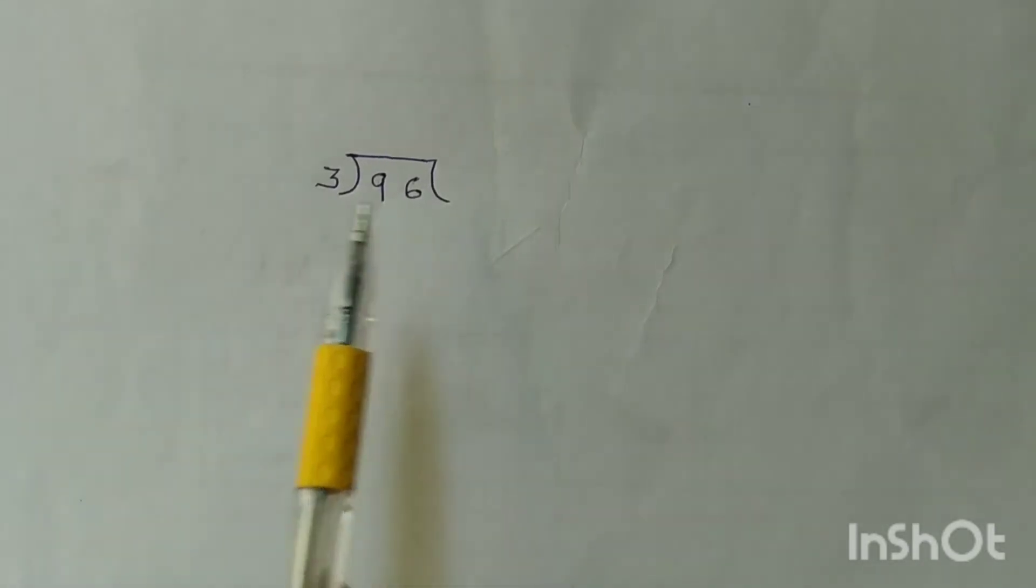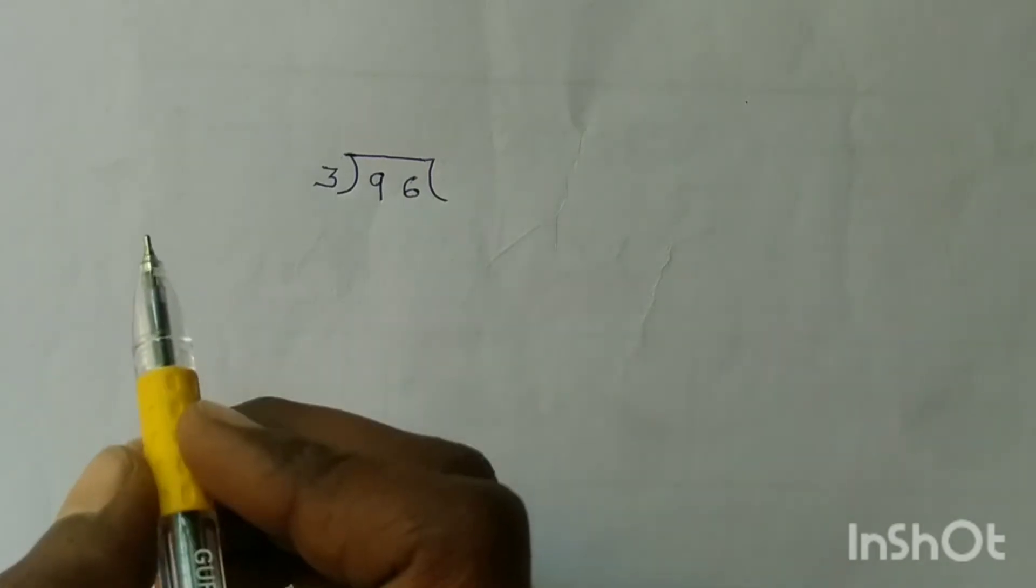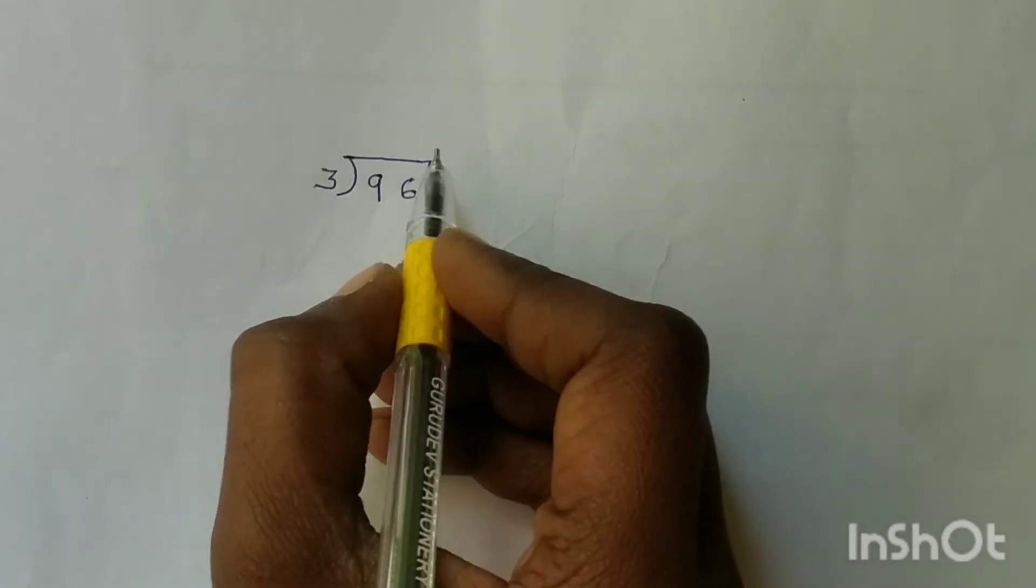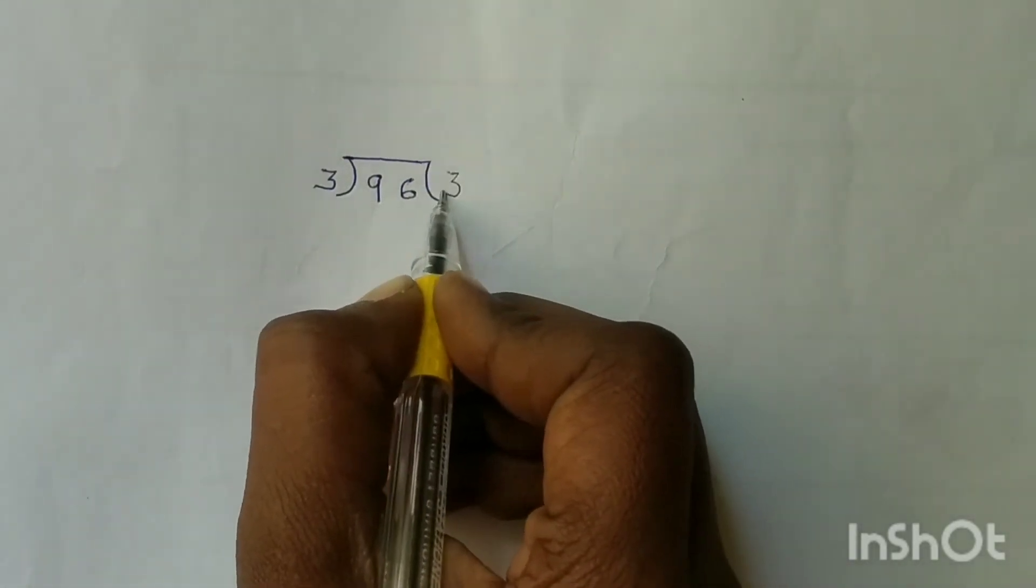We will divide 96 by 3. Divide 9 by 3. First we will divide 9 by 3. 3 times 1 is 3, 3 times 2 is 6, 3 times 3 is 9. So write 3 in the quotient.